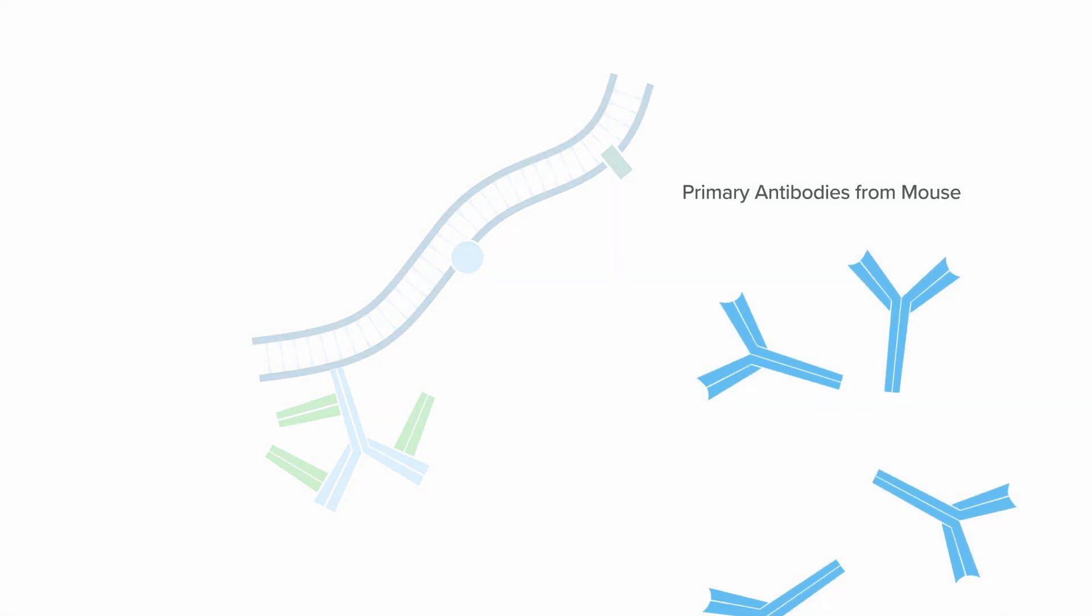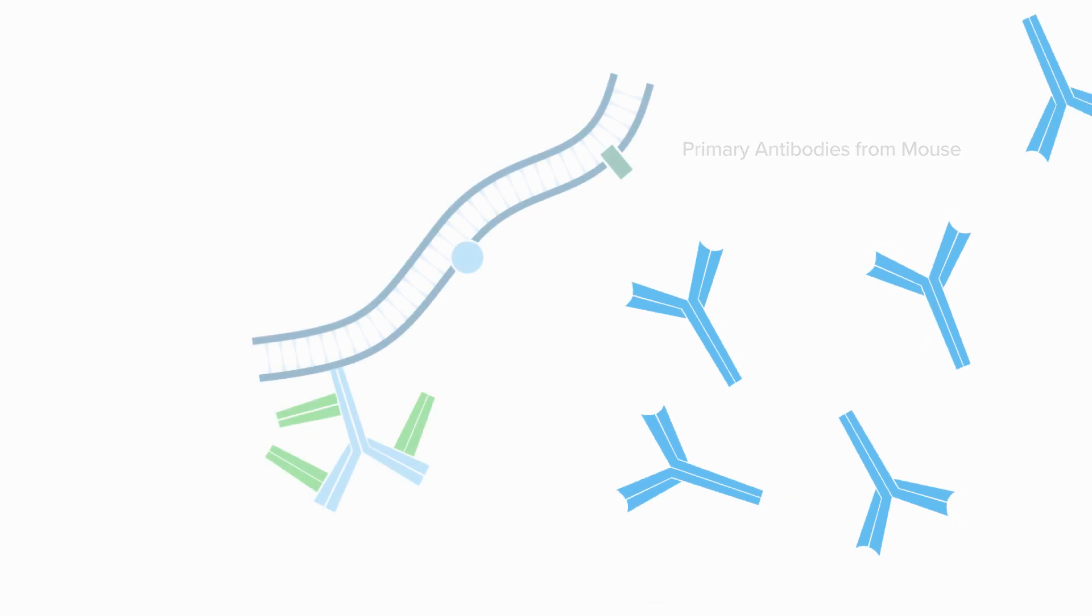Background from endogenous immunoglobulin can be prevented by blocking them with unconjugated fab fragments directed against the whole species of the tissue prior to incubating the sample with the primary antibody from the same species as the sample.